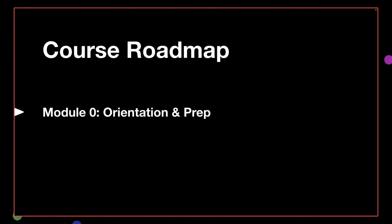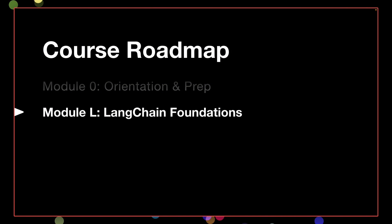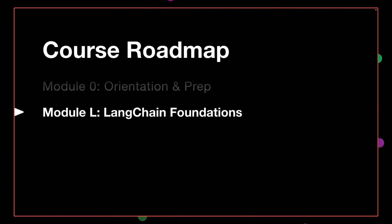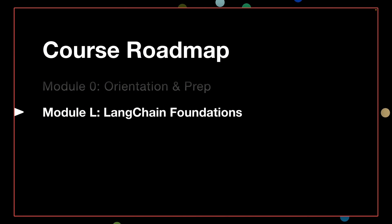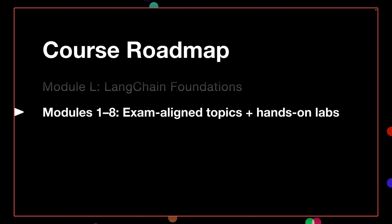The course is divided into structured modules. Module 0 covers orientation and the prep required for your certification. Module L focuses on the foundations of the LangChain library, added to get you comfortable with the building blocks, since the exam expects you to know how to build agentic AI systems. LangChain is the most widely used library in production. If you're already familiar with it you can skip ahead, but if you're new I highly recommend practicing the LangChain foundations.